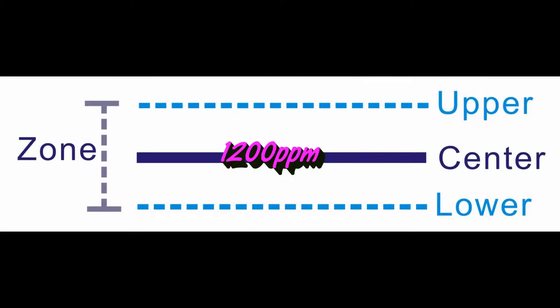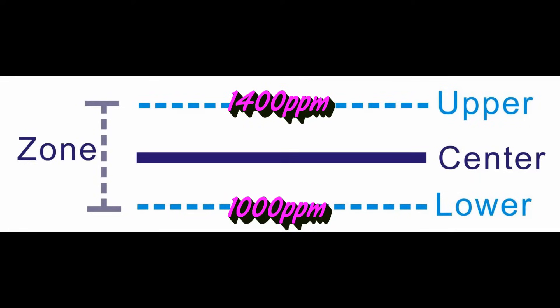For example, while the center is 1,200 ppm, zone is 400 ppm, this means the controlling upper and lower limits are 1,400 and 1,000 ppm.